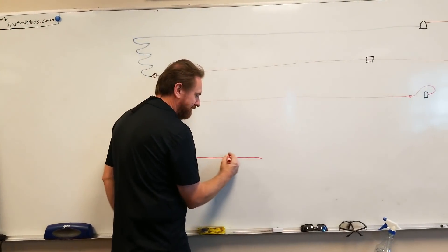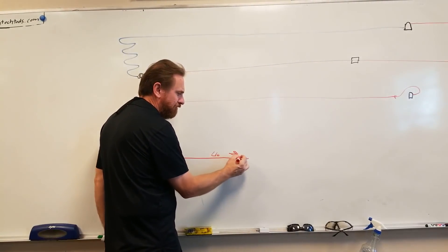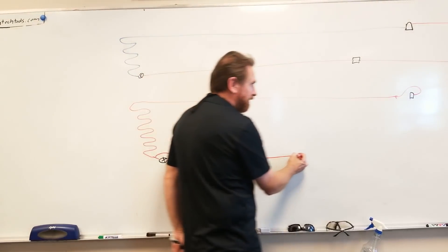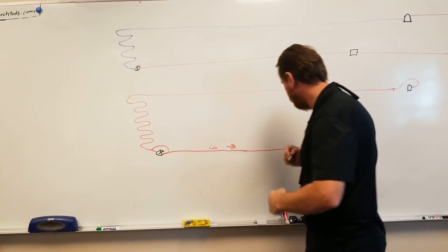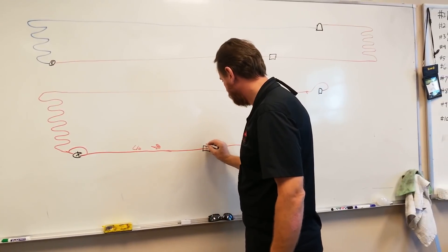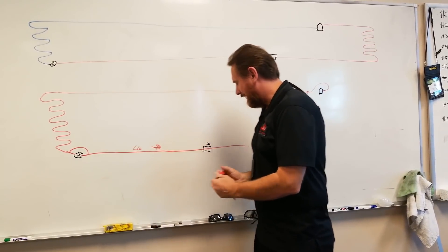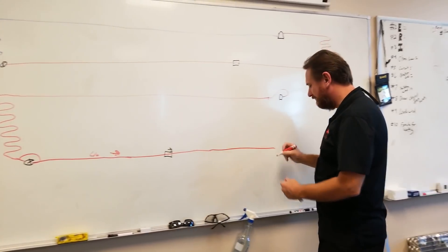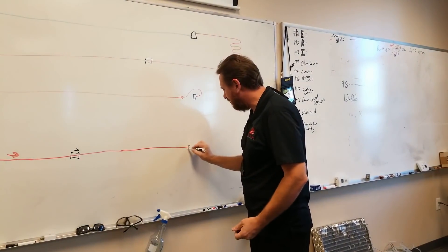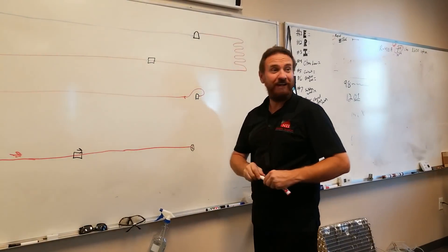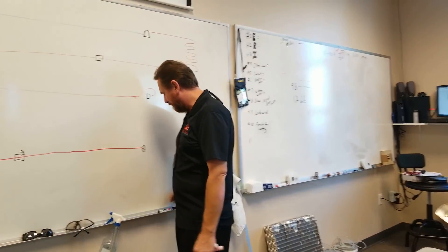This line here would be the liquid line, just going the opposite direction. I have to turn my filter dryer around so it faces the other way. And then out here on the outside unit, what if I added a metering device here? Same coil. If I put a metering device there, what happens to my pressure? It would drop — low temperature, low pressure.